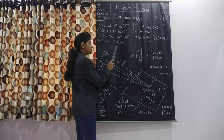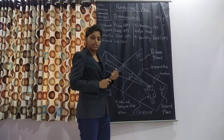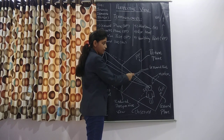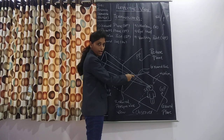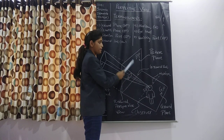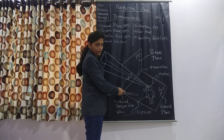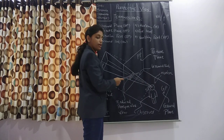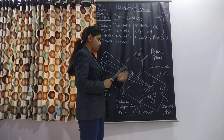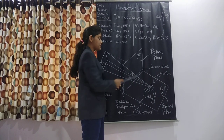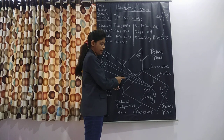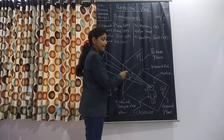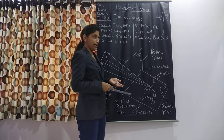The fourth definition is of ground line, GL. In the figure, I have indicated one line named ground line which intersects the picture plane and ground plane with each other. The definition of ground line is that the line which intersects the vertical picture plane and horizontal ground plane with each other is known as ground line.